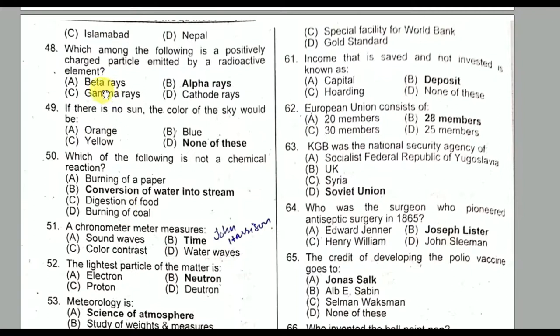Question number forty-eight: Which among the following is a positively charged particle emitted by a radioactive element? It is alpha rays. Option B is the correct option. Question number forty-nine: